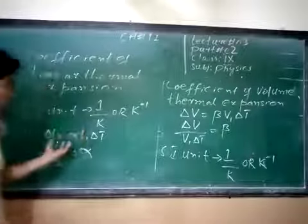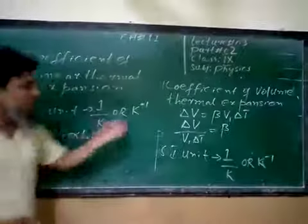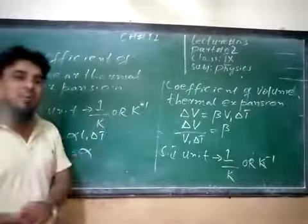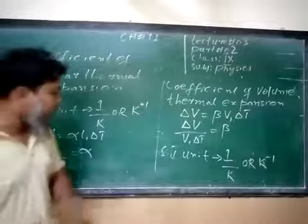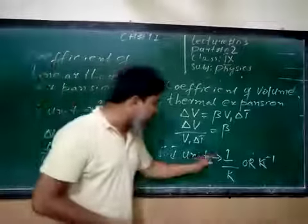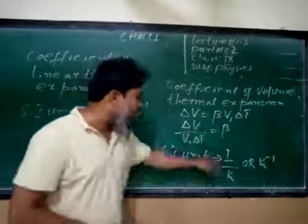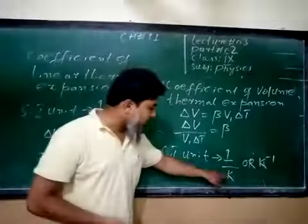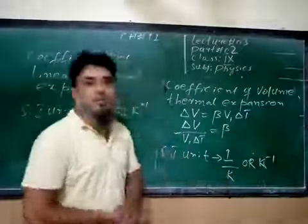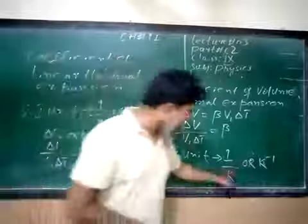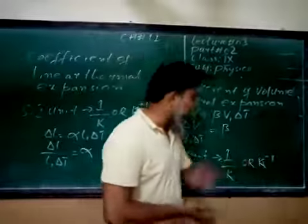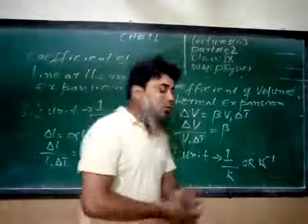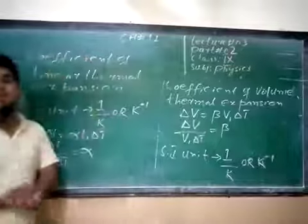Fractional change in length versus fractional change in volume — here we are looking at the fractional change in volume per degree rise in temperature. The SI unit is 1 upon Kelvin, i.e., Kelvin to the power minus 1. These two definitions are the same.